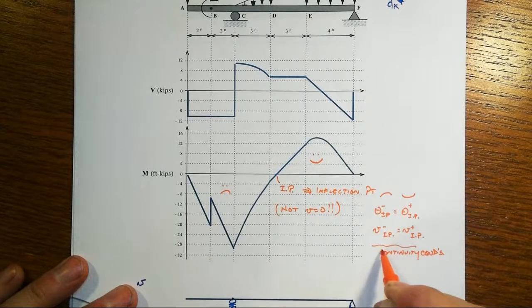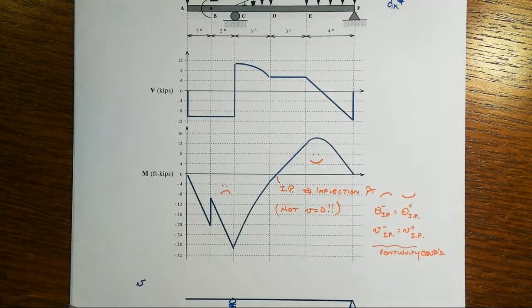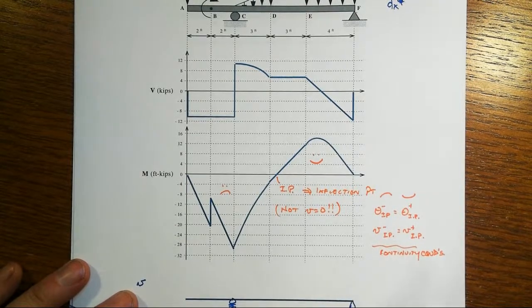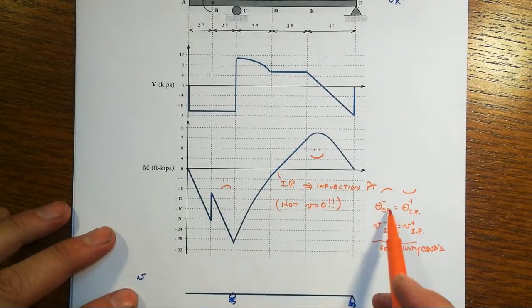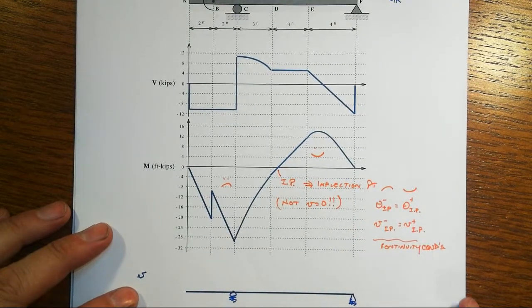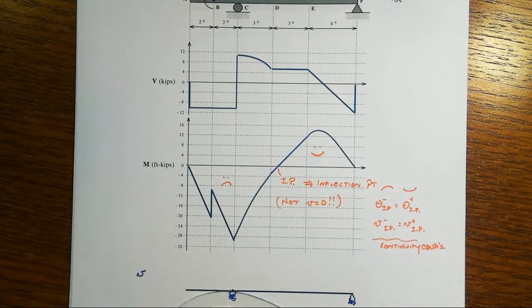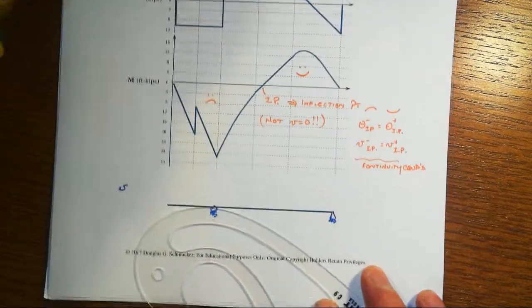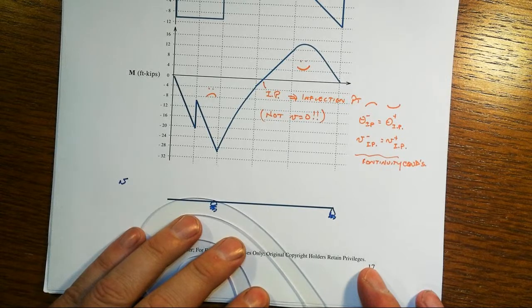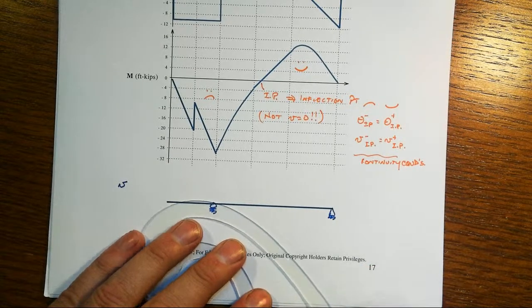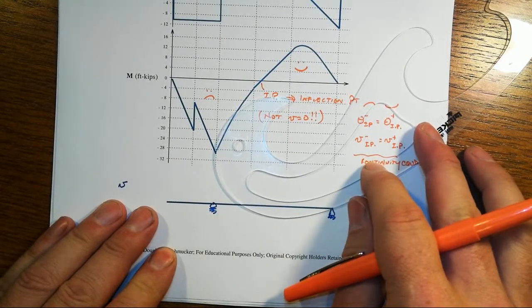So these are continuity conditions that if we were going to integrate this, we'd also have to take account of in a variety of ways. From a drawing standpoint, though, we have to have these kinds of continuity conditions, and what that says is that somehow we have to have, again, concave down over on this left portion, and I don't know if we have zero slope at the roller. There's nothing that says that we would, so I don't want to draw it that way, and we have to have concave up over in this other, right?